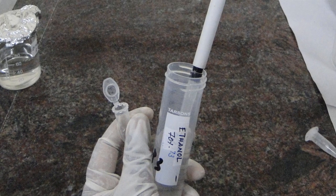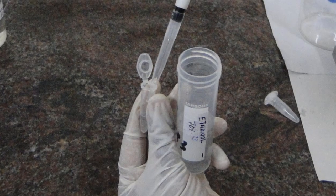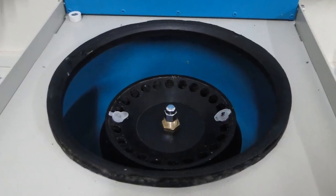Wash the pellet with 70% ethanol using a pipette. Centrifuge it for 10 minutes at 10,000 RPM.